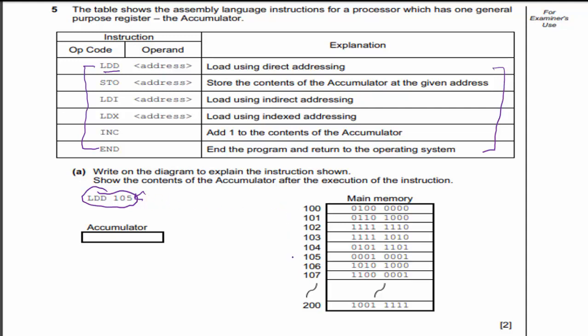LDD means load using direct addressing, and the operand is the address. We're not going to load 105 — we're going to load the contents of address 105. So I go over here, I look at 105, and I'm going to load this data into the accumulator. I write that binary number down: 00100001. I pick up two points by writing the accumulator value and drawing an arrow to address 105 showing that I did it correctly.